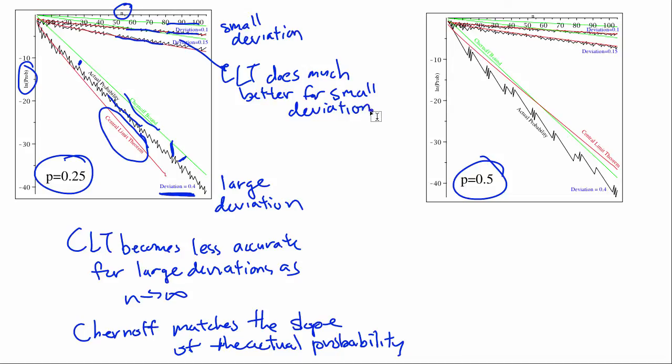Because Chernoff provides this cushion as it's an upper bound. But this cushion really helps for the large deviation. And so what's important to note from the lecture notes, from the notes.